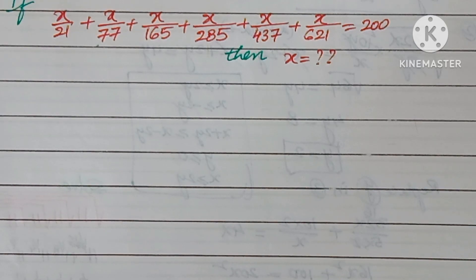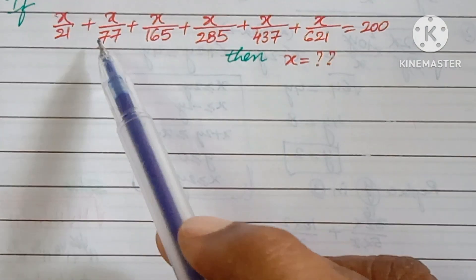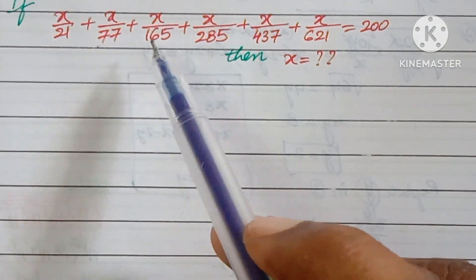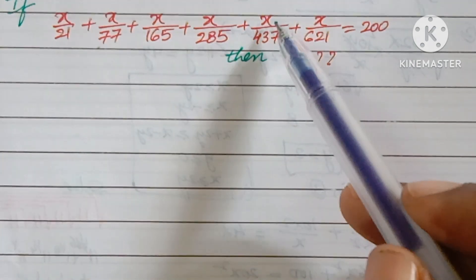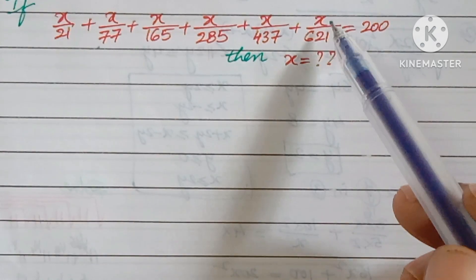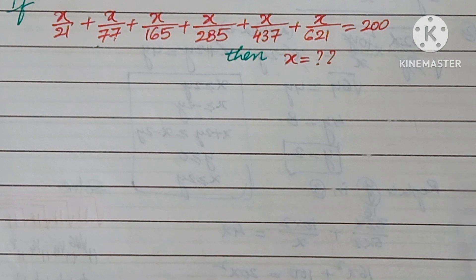Hello, welcome back to NCG Max. Today we are going to see one logical question. The question is: if x/21 + x/77 + x/165 + x/285 + x/437 + x/621 = 200, then find the value of x.